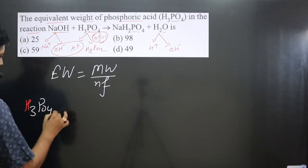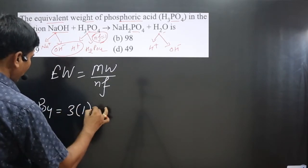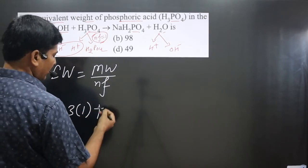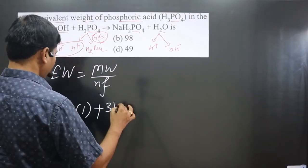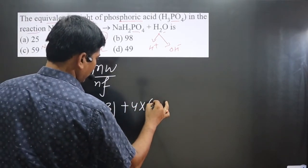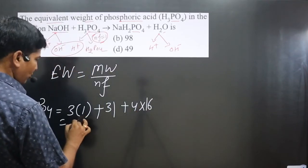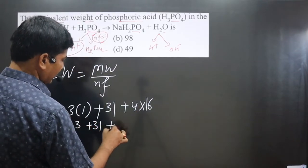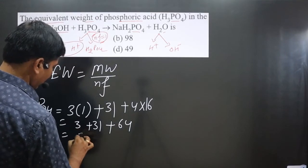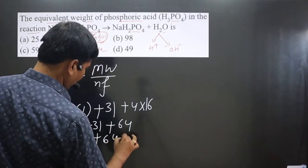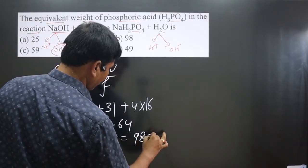For H₃PO₄: hydrogen is 3×1=3, phosphorus is 31, and oxygen is 4×16=64. Adding these: 3+31+64=98 grams per mole. This is the molar mass.